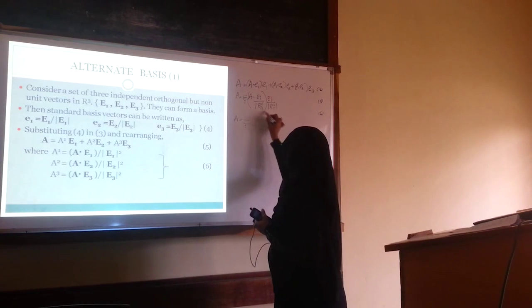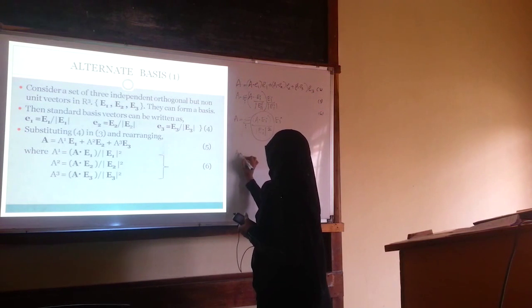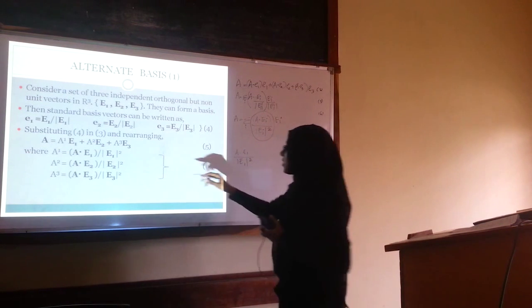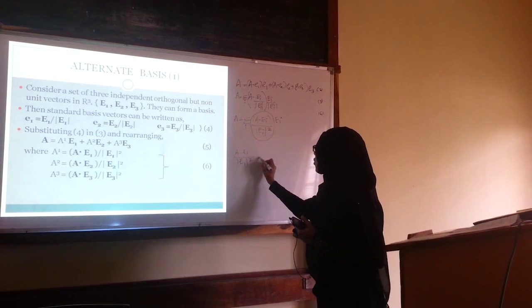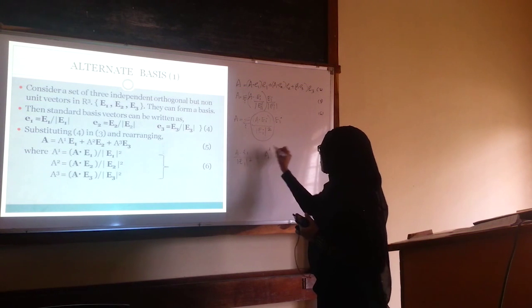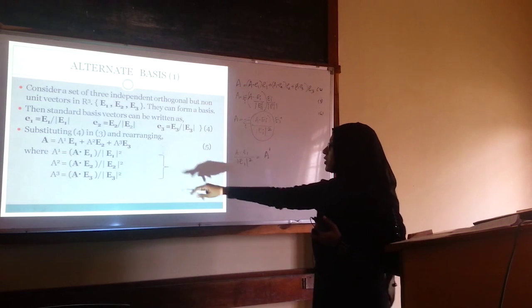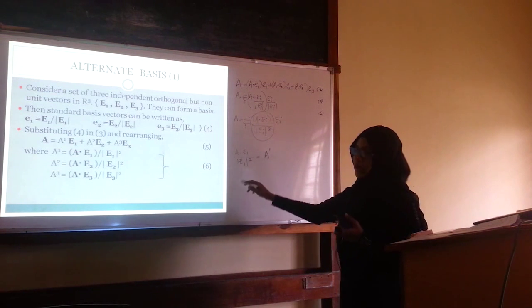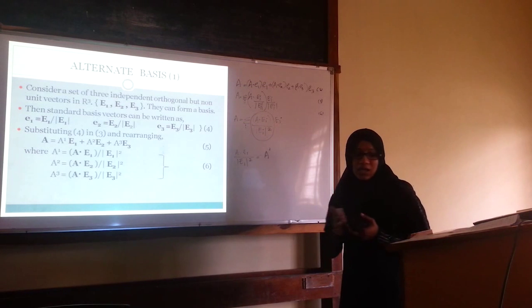Each component of A in this non-normalized orthogonal basis becomes: a1 = A·E1 / |E1|², a2 = A·E2 / |E2|², and a3 = A·E3 / |E3|².